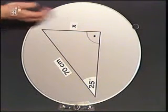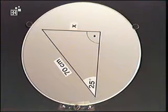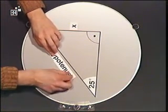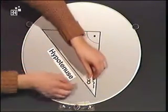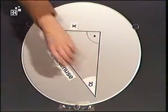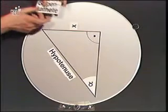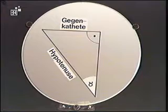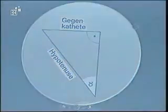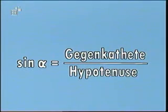Diese Seiten erhalten daher im rechtwinkligen Dreieck spezielle Namen. Die Seite, die dem rechten Winkel gegenüber liegt, heißt Hypotenuse. Und die Seite, die dem Winkel Alpha gegenüber liegt, heißt Gegenkathete. Im rechtwinkligen Dreieck wird also durch Sinus Alpha das Verhältnis von Gegenkathete zu Hypotenuse beschrieben.